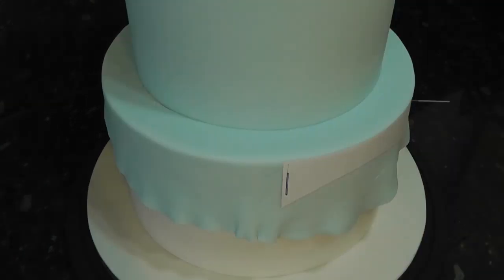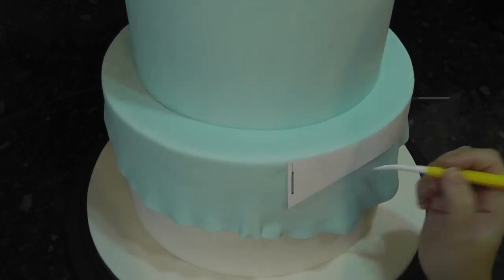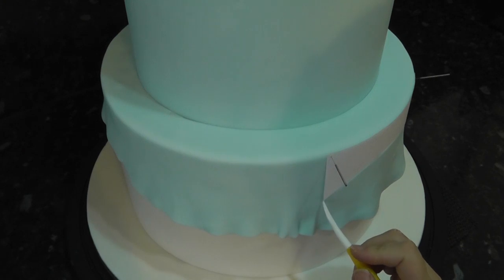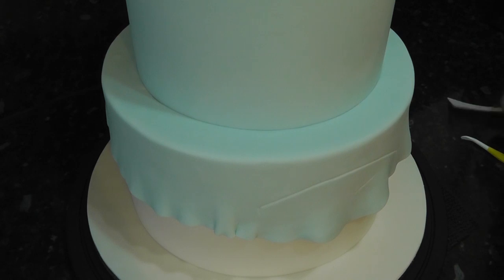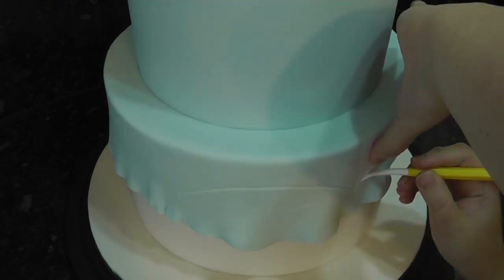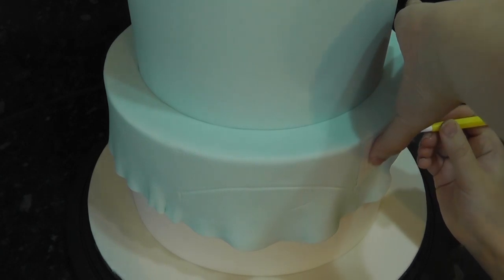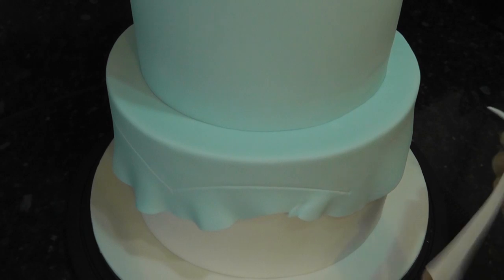Now pin your template across the top edge with acupuncture needles, and with a dresden tool mark along the arch. Also mark the ends so it makes it easier for you to line the next template up. Now take off the template and line it up for the next one. You can continue to pin it if you like, but I'm just holding it in place. Make sure you do a few on each side so that you end at the back.